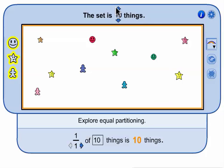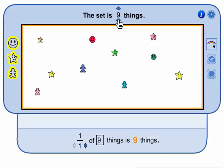Click these arrows to increase or decrease the number of things in the whole set. Get ready to explore partitioning this set by clicking these arrows.